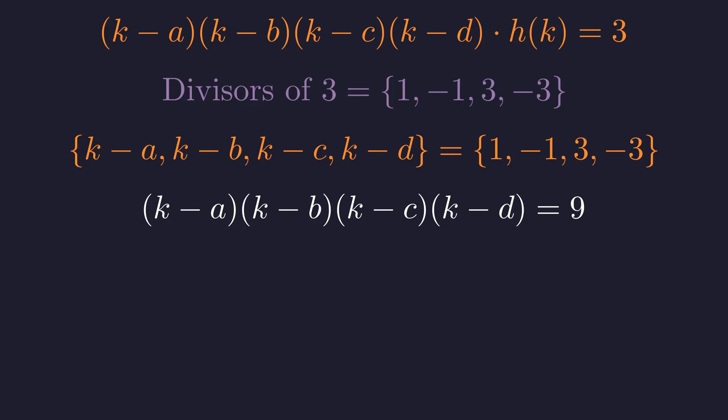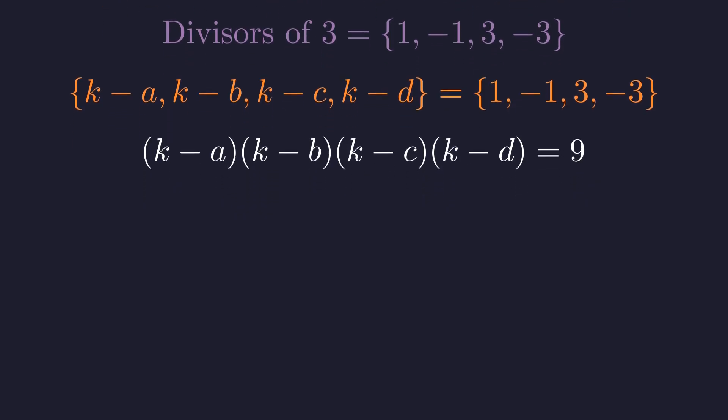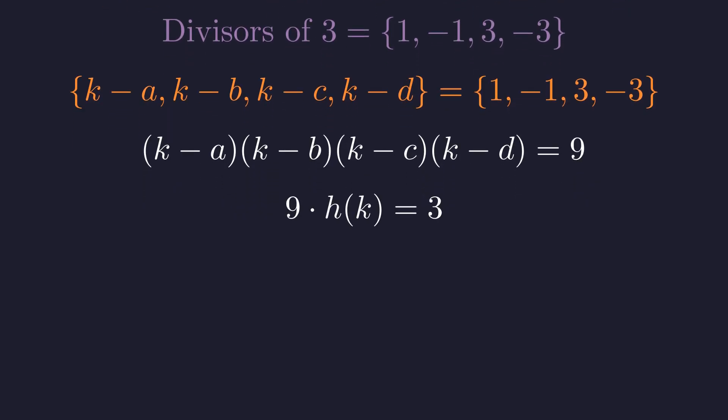But wait! Let's go back to our original equation. We now know that product equals 9. So our equation becomes 9 times h of k equals 3. Dividing both sides by 9 to solve for h of k, we get h of k equals 3 ninths, which simplifies to 1 third. So h of k equals 1 third.